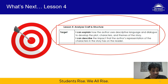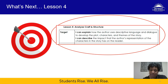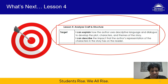We are moving on to analyzing craft and structure. This is where we take off our reader's lens and put on our writer's lens to examine how the author made certain choices to communicate the plot, the theme, and the characters — and to make the reader feel a certain kind of way. Our target for tomorrow: I can explain how the author uses descriptive language and dialogue to develop the plot, characters, and themes. I can describe the impact that the author's representation of the characters has on the reader. All of that should seem doable — and that's because it is. Looking forward to another successful day with you tomorrow. Remember to complete all those activities, get help where you need it, and I'll see you here again.